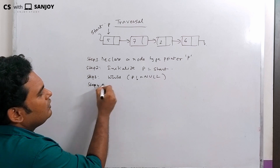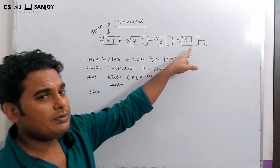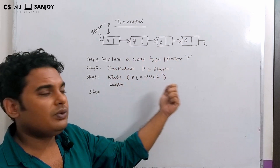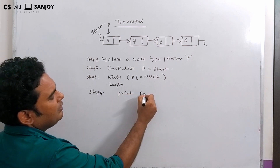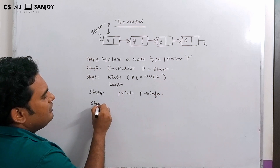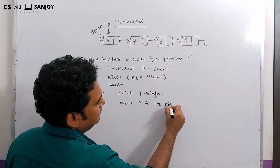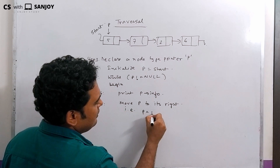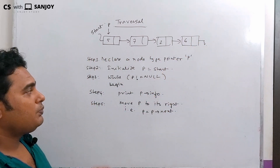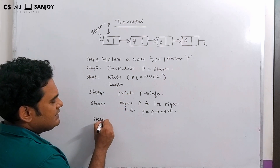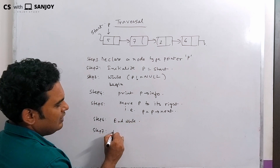Step 4: print P information. Step 5: move P to its right — that is, P equals to P next. Step 6: end while. Step 7: end procedure.